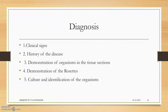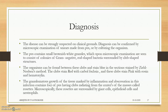Diagnosis is based on clinical signs, history of the disease, demonstration of the organism in the tissue, demonstration of the rosette, cultural identification, and on clinical grounds. The pus will contain small gram-negative bacteria surrounded by the gram-negative rod colony. The clubs stain red with carbol fuchsin, and these clubs stain pink with eosin and hematoxylin.